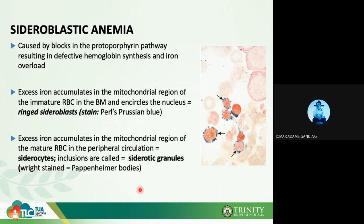In sideroblastic anemia, there is a problem with protoporphyrin production. It can be caused by lead poisoning, among other causes, resulting in interruption of the heme pathway. A separate video will be created covering sideroblastic anemia and porphyria in more detail.